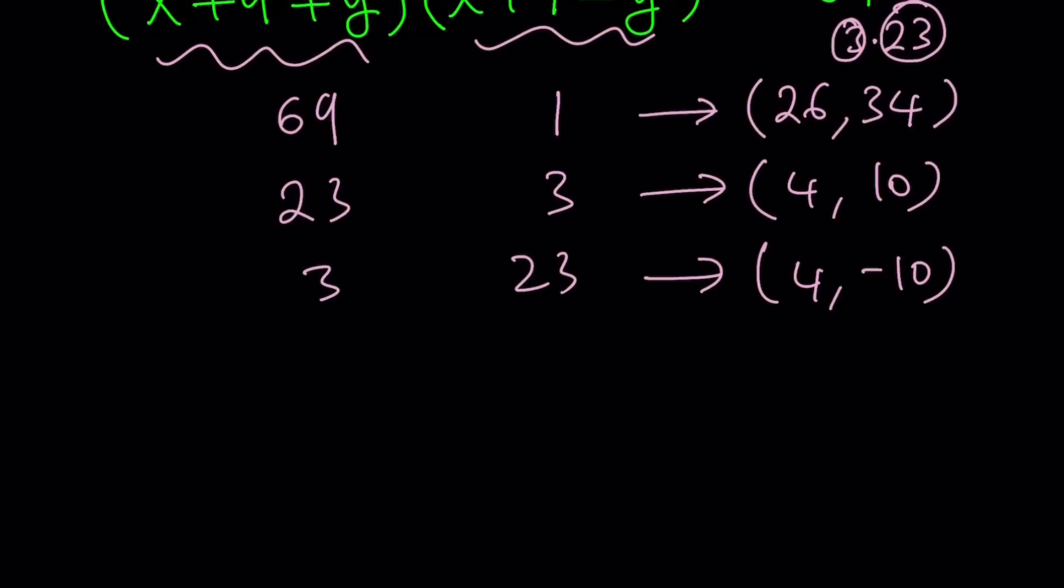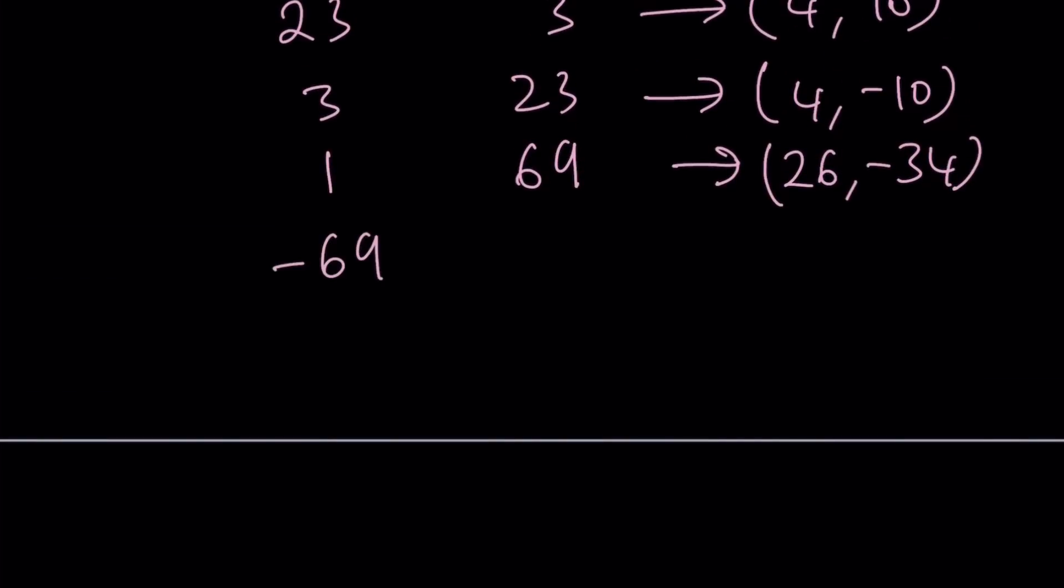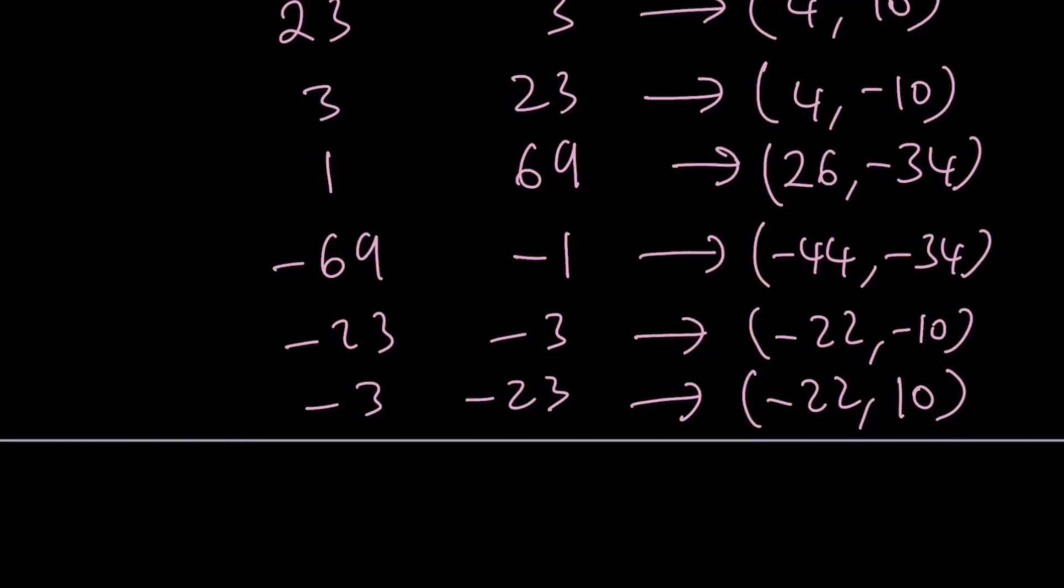So the next one, it's not too hard to guess. If you go with 1 and 69, this should give you pretty much the same thing as the first one, except y is going to be negated. So those are the first four. And then now we can look at the negative factors like -69 and -1. This is going to give us (-44, -34). Both of them are going to be negative in this case. And then we have the -23 and -3, which gives (-22, -10). And then we have -3 and -23, and finally -1 and -69.